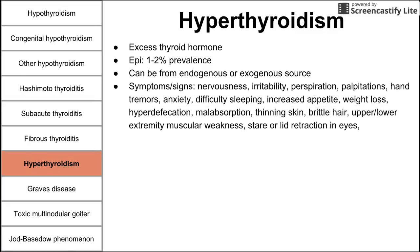Symptoms of hyperthyroidism contrast with hypothyroidism: diarrhea/hyperdefecation versus constipation; palpitations and high heart rate versus low heart rate; moist, sweaty skin versus dry skin. Symptoms include nervousness, irritability, perspiration, palpitations, hand tremors, anxiety, difficulty sleeping, increased appetite, weight loss despite increased appetite, hyperdefecation, malabsorption, thinning skin, brittle hair, muscle weakness, and a stare or lid retraction making the eyes appear prominent.